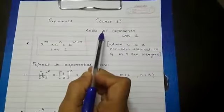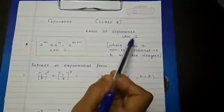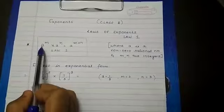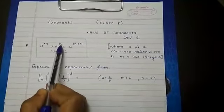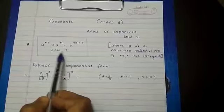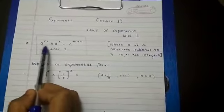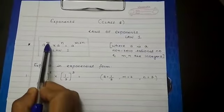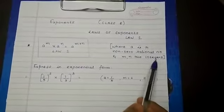So today we are going to learn laws of exponents. Law 1 says that a raised to m into a raised to n will give you a raised to m plus n. This is the law 1 where a is the same, that means they are non-zero rational numbers, and m and n are integers.